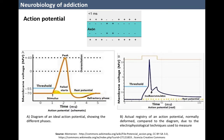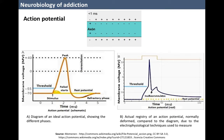If this action potential reaches an electrical synapse, the current passes directly to the postsynaptic neuron. But if it is a chemical synapse, the change in electrical charge opens pores in the membrane through which calcium ions enter. This higher concentration of calcium inside the presynaptic neuron sets off the start of neurotransmission.